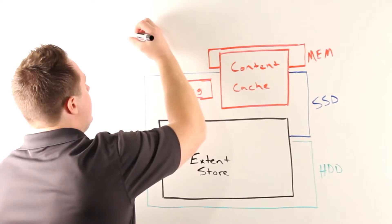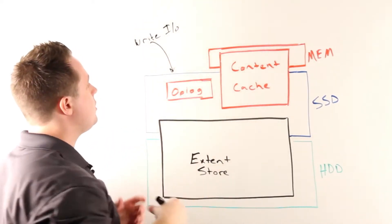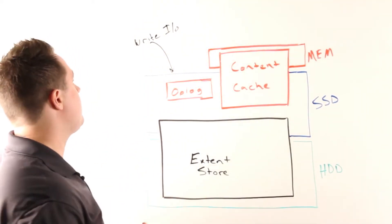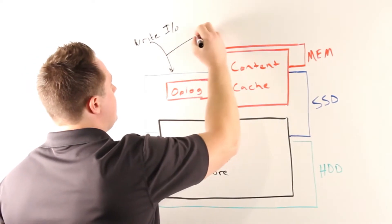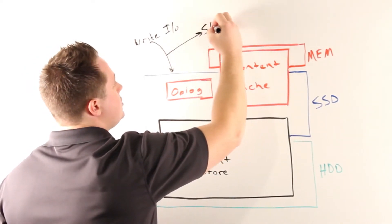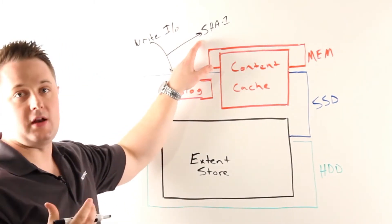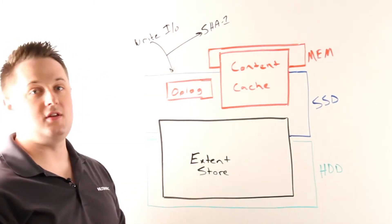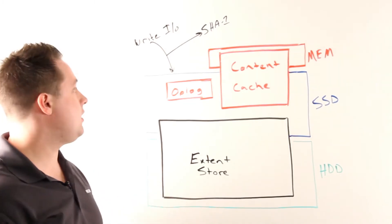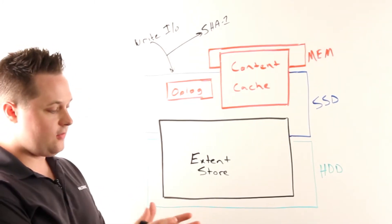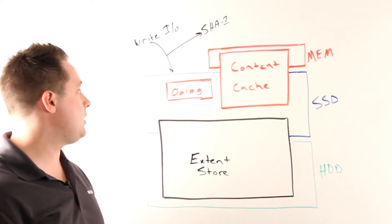Upon a write I.O., for larger I.O.s, we'll do what we call fingerprinting. That fingerprint is taking a SHA-1 hash of a certain granularity of data and storing it in the metadata. What that allows us to do is uniquely identify certain chunks or pieces of data. From there we can identify duplicate fingerprints and perform deduplication.